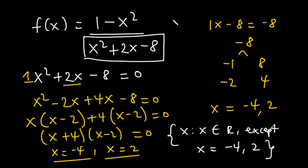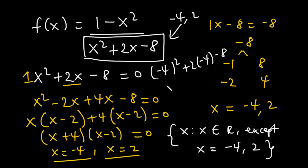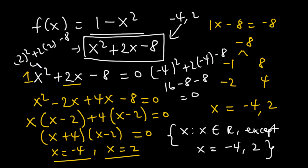Let's verify by substituting x equals negative 4 into the denominator: negative 4 squared plus 2 times negative 4 minus 8 equals 16 minus 8 minus 8 equals zero — confirmed undefined. For x equals 2: 2 squared plus 2 times 2 minus 8 equals 4 plus 4 minus 8 equals zero — also undefined. So the domain is x is such that x is the set of all real numbers except x equals negative 4 and x equals 2.